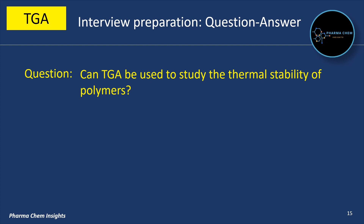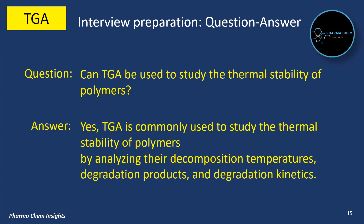Can TGA be used to study the thermal stability of polymers? Yes, TGA is commonly used to study the thermal stability of polymers. This can be done by analyzing their decomposition temperatures, degradation products, and degradation kinetics.